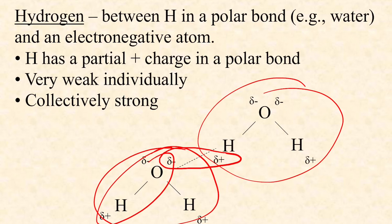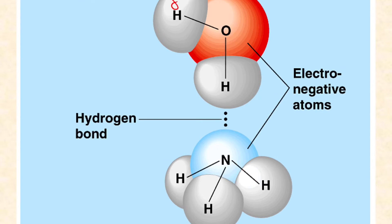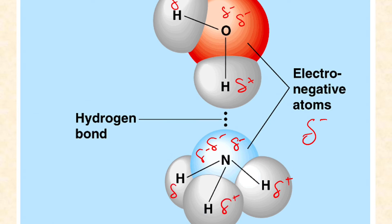Hydrogen bonds frequently include hydrogen, though not always, and frequently include nitrogen or oxygen, though not always. Individually they're pretty weak bonds, but collectively they really add up and make a difference — and we'll see that especially in DNA. For example, the partial positives around the hydrogens in water are attracted to the partial negatives around the nitrogen in ammonia. These polar covalent bonds and the partial charges they leave behind can really determine the solubility of a molecule.